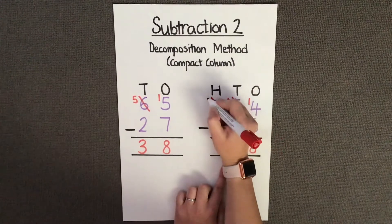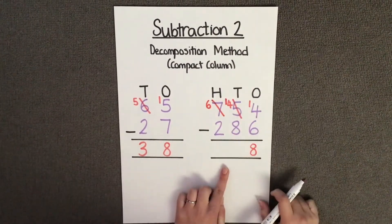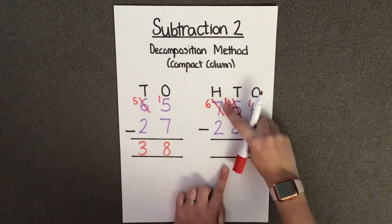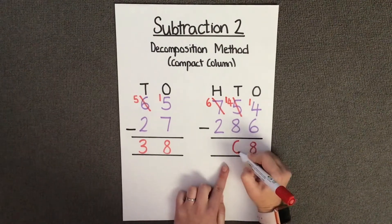And I'm going to carry that over to my tens column. This leaves me with 14 tens, and I'm going to take away 8 tens, which is 6 tens.